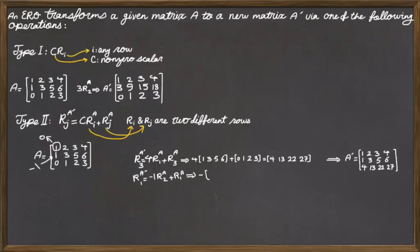That will give me this new first row in matrix A'. So, if we do this operation, we'll have negative 1, 3, 5, 6, plus the first row, which is 1, 2, 3, 4.